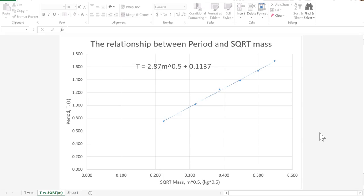And if you're doing the 3.1 internal for level 3 physics, you would need to look at the uncertainties for period and square root mass and use those